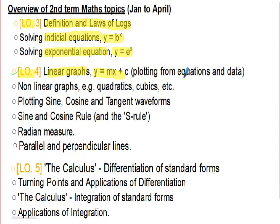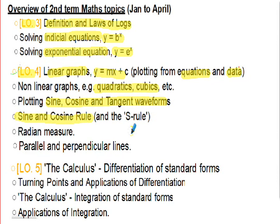Learning outcome four was graphs. We took linear graphs — y = mx + c — and plotted those from equations and from given data. We looked at non-linear graphs: quadratics and cubics. Then we plotted the sine, cosine, and tangent waveforms — the periodic continuous waveforms for sine and cosine, and the periodic but discontinuous tangent waveform.